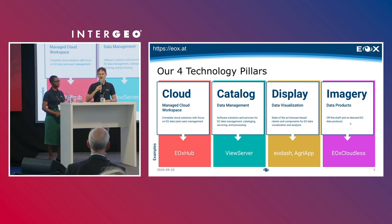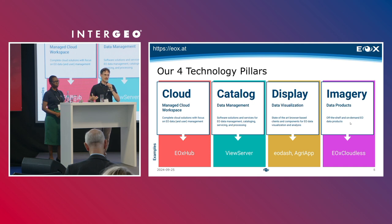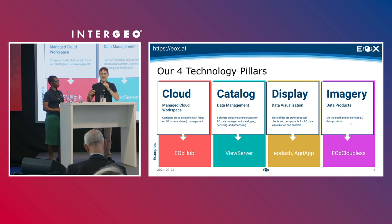All of this can be used to make it easier for decision-makers to use satellite information. We build our technology upon four pillars: the cloud-based system EOX Hub; our cataloging server called ViewServer for data management, cataloging, and serving of large volumes of satellite data; data visualization dashboards that are web-based, including EODASH for Earth Observation dashboards and the AgriApp for agricultural use cases; and finally, we process our own data products called EOX Cloudless.